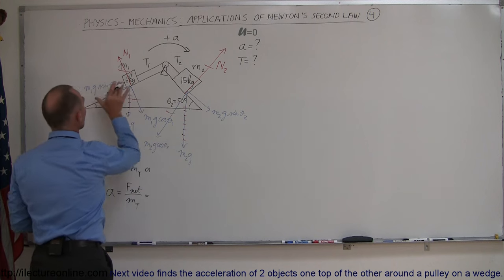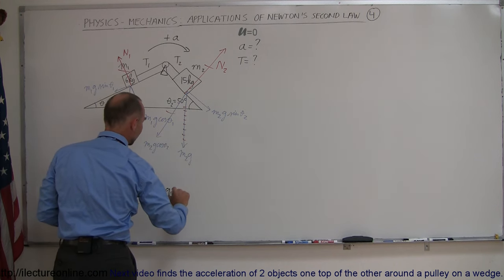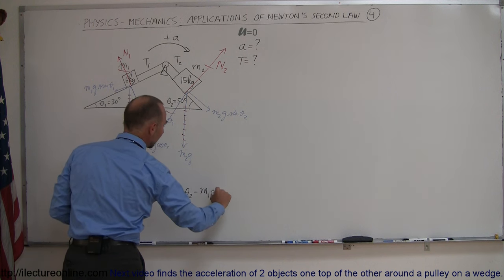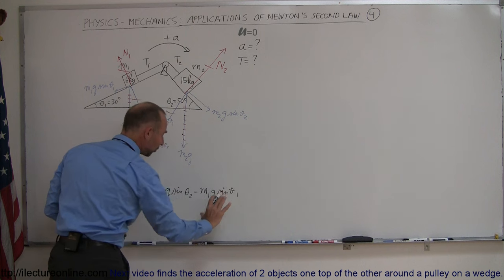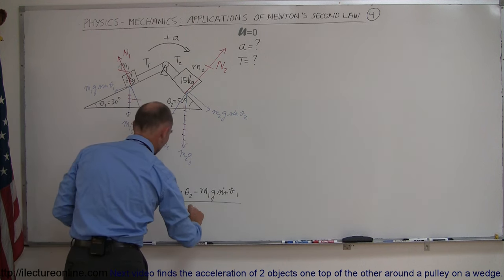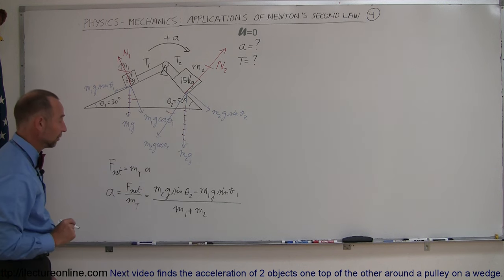This one is aiding, this one is opposing, so this would become m2g sine of theta two minus m1g sine of theta one. That would be the net force acting on the system divided by the total mass which is m1 plus m2. That would give me the acceleration of the system.